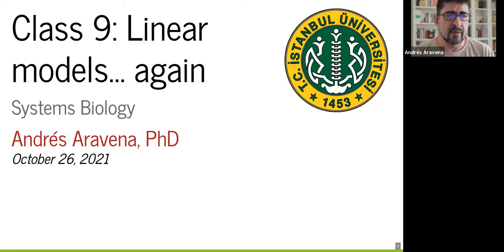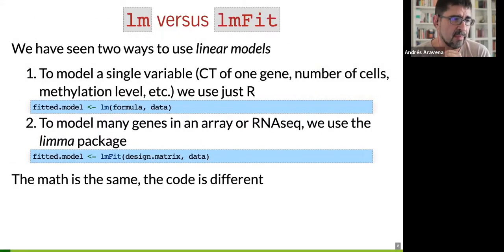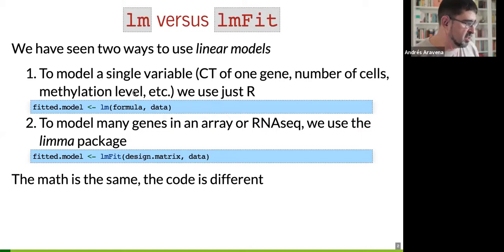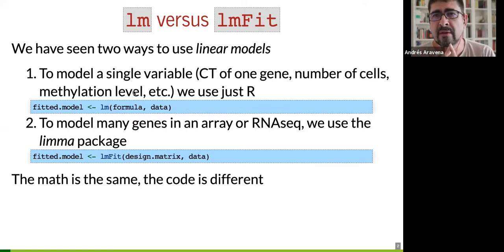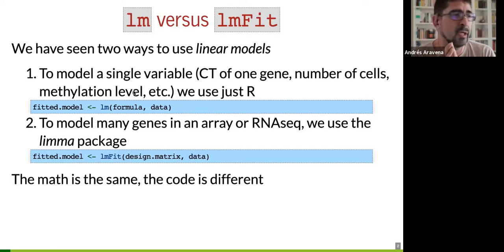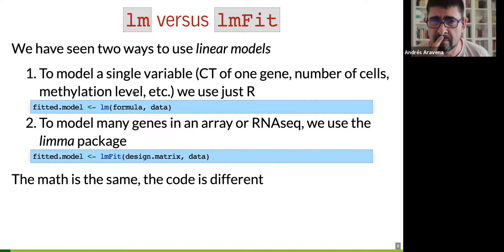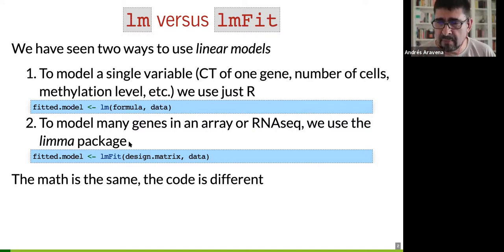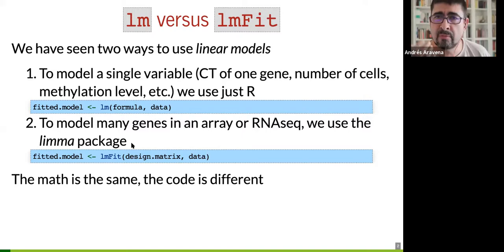We have seen two ways to do linear models. The way in R that we use for a single gene or a few genes — like I showed you with the CT value of a plant, with weight and sex, and with the number of cells in the brain. Then I gave you another example using Limma with the data of microRNA expression across different diets, ages, and tissues.